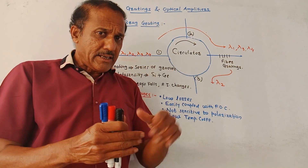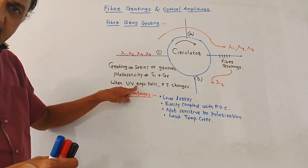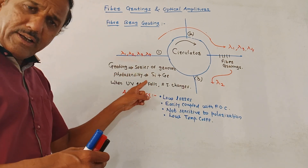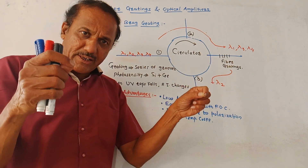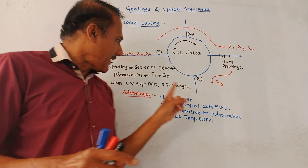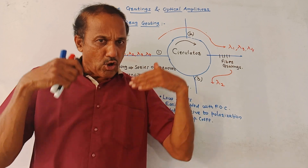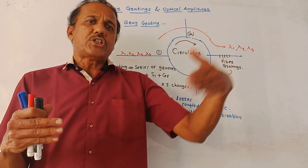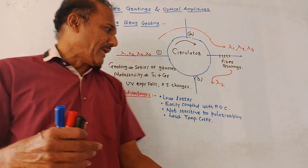To obtain this effect, UV light rays are used to form the gratings. When UV light rays fall on the core layer of the optical cable, the refractive index (RI) of the core layer changes, and accordingly it is decided which wavelength is reflected and which remaining wavelengths are to be transmitted.